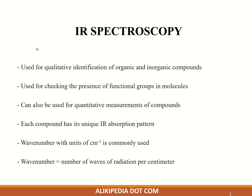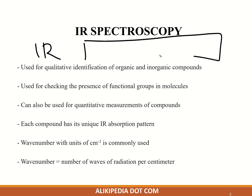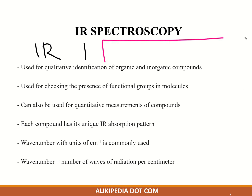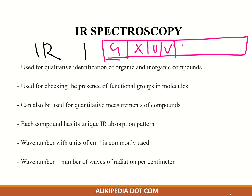IR spectroscopy is the spectroscopy which deals with the IR region of the electromagnetic spectrum — that is light with a longer wavelength and lower frequency than visible light. In the electromagnetic spectrum we have gamma ray, X-ray, UV, visible, IR, microwave, and finally radio.